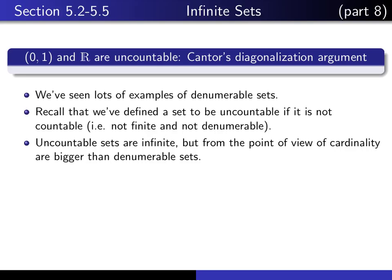So uncountable sets, from the point of view of cardinality, are really much bigger than denumerable sets. They're bigger in the sense that it's possible to get an injection from a denumerable set into an uncountable one, but it's impossible to make that injection a surjection.